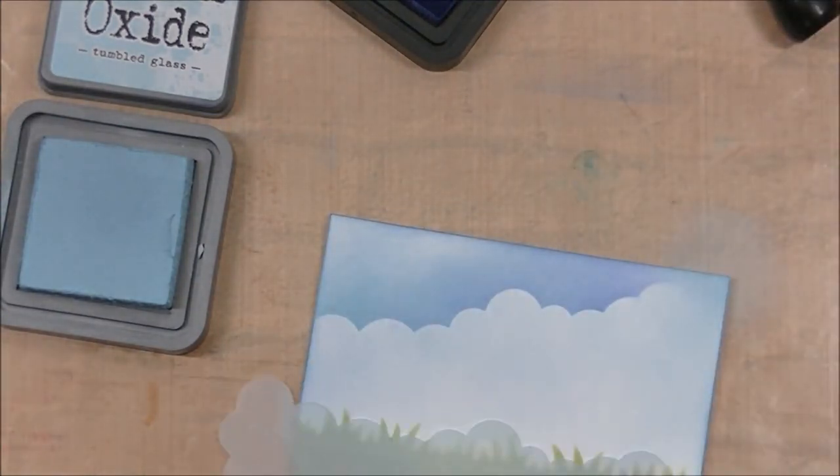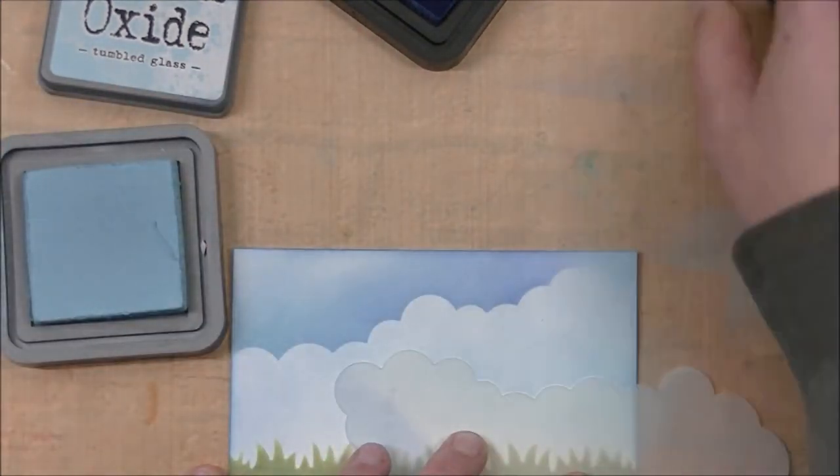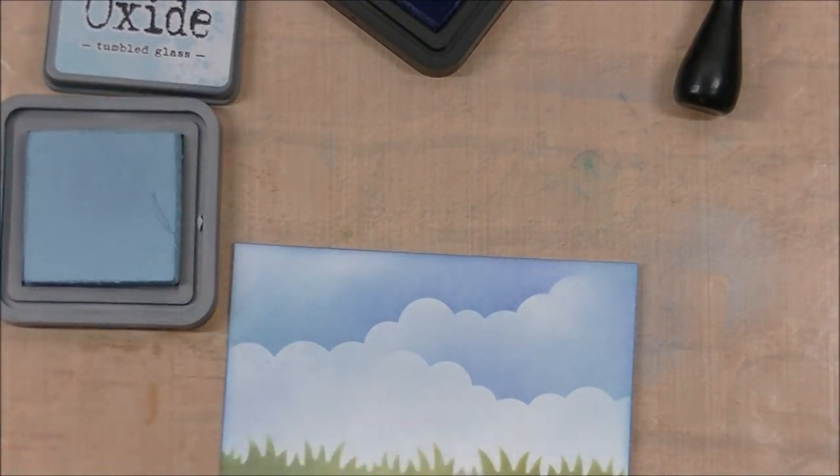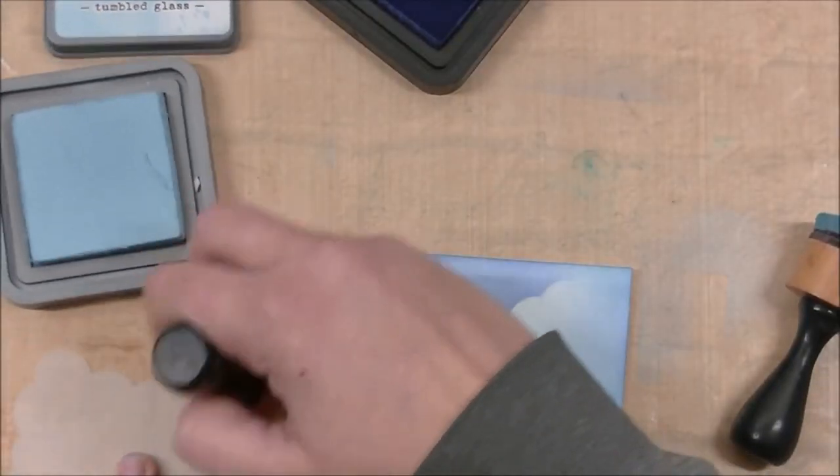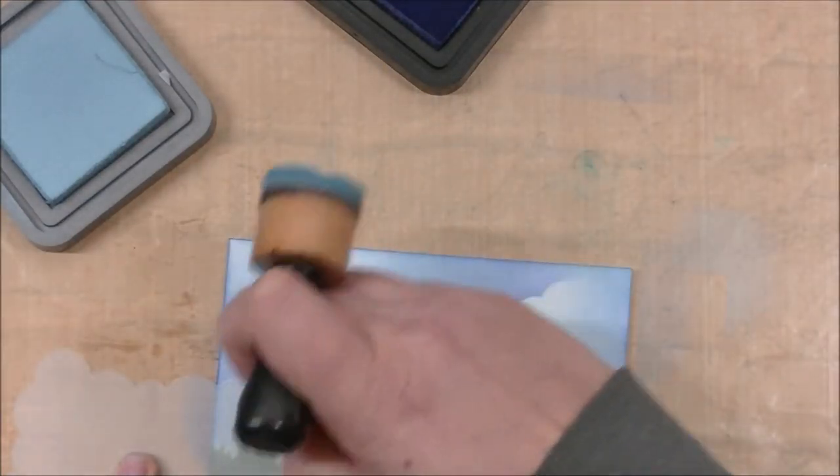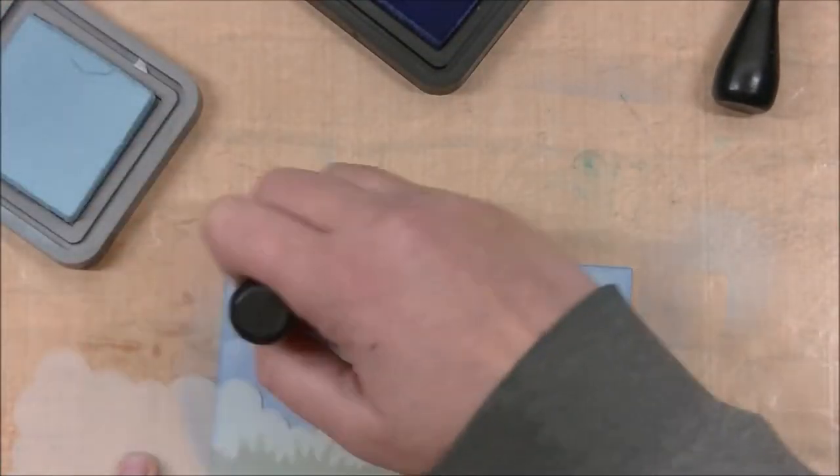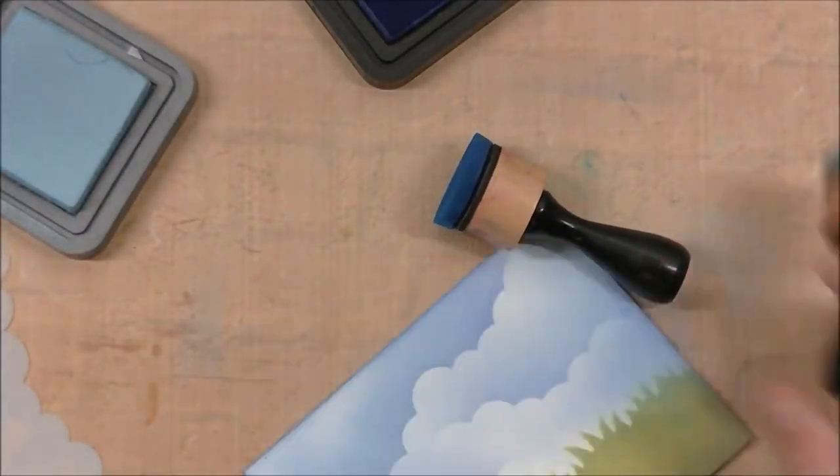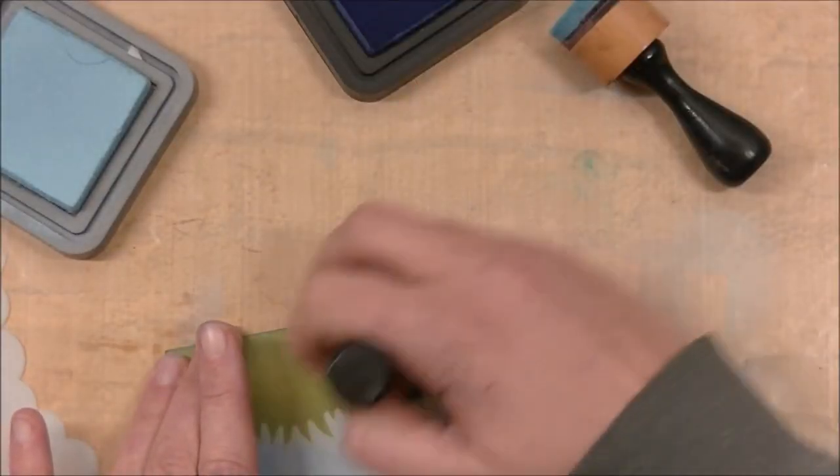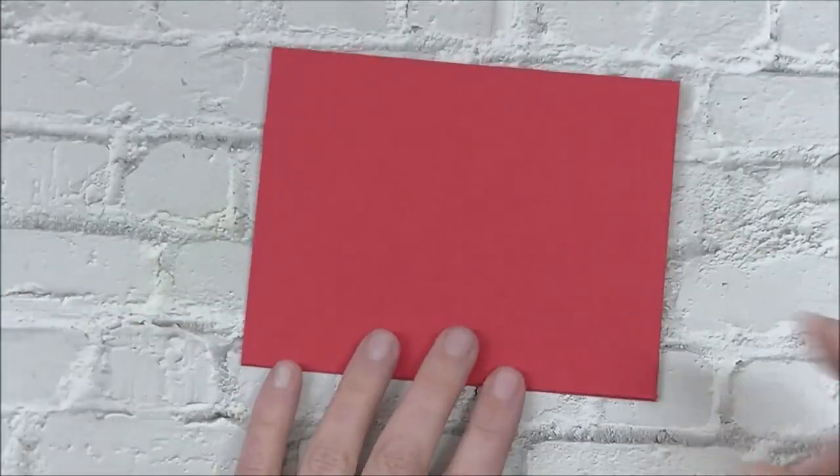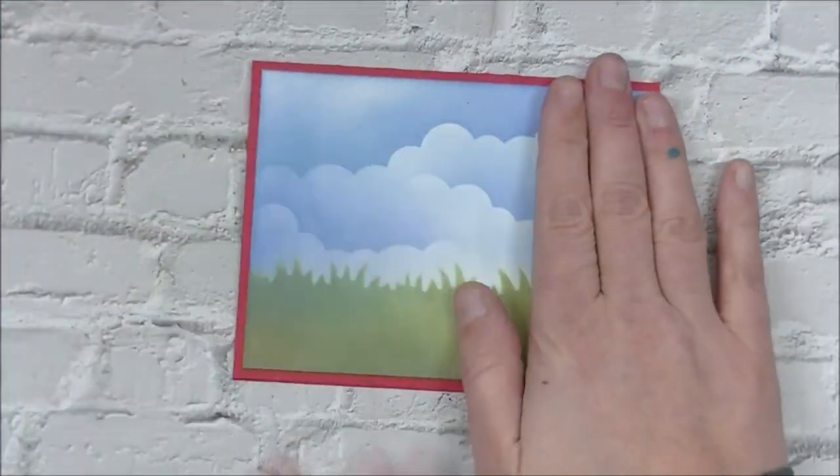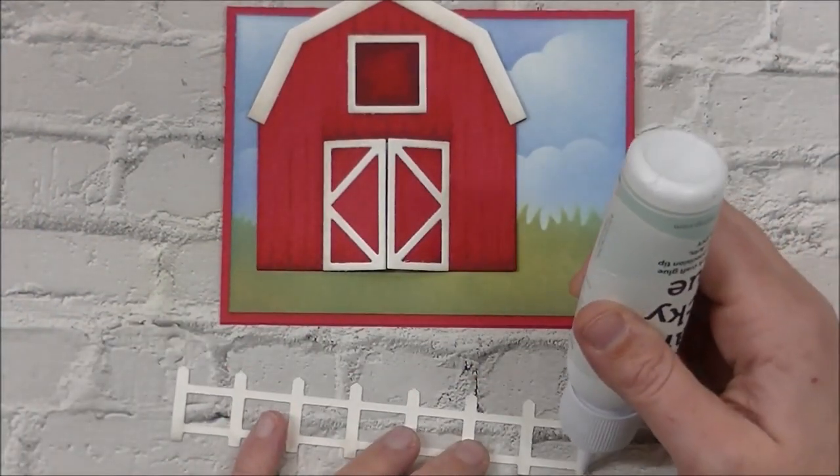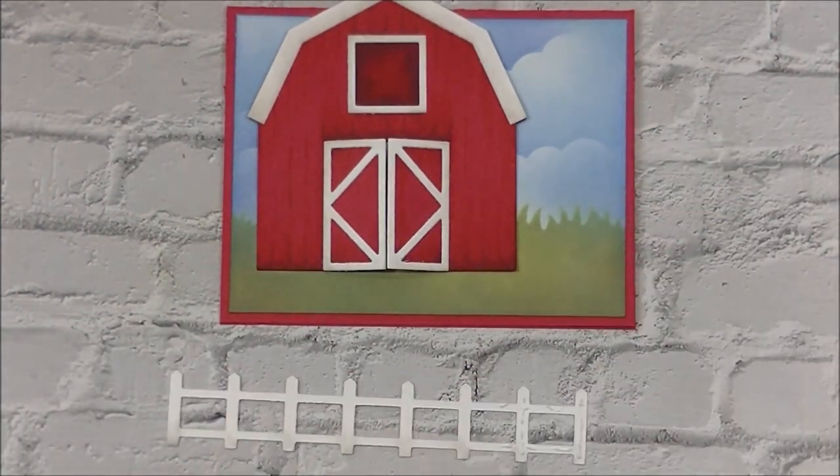Now we're going to take the Tumbled Glass Oxide and start stenciling in some of these clouds using the Mini Cloud Stencil. Then I have the Blueprint Sketch Ink. I'm going to add the Blueprint Sketch Ink, and then go over top of it with the Tumbled Glass, just to have a smoother transition so the inks didn't look quite so stark against each other. I just kind of work back and forth and randomly rotate the clouds around, so I'm not using the exact same ones everywhere, adjusting where I put the lighter and darker colors. I'm working at that bottom corner, just adding some down there so it wasn't quite so bright just before the grass.